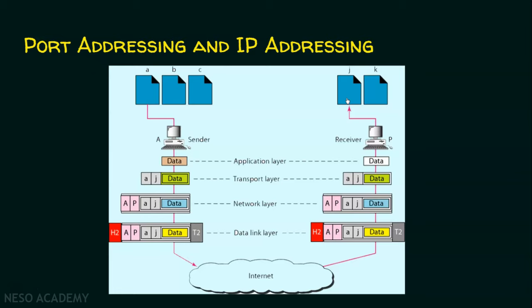That is the working of port addressing and IP addressing. Port addressing is done in the transport layer, and IP addressing is in the network layer. To make things easy to understand, I used port numbers A and J, but in reality source and destination port numbers are 16 bits. If it is an IPv4 address, it is 32 bits for both source and destination IP addresses. If it is IPv6, the source and destination IP addresses are 128 bits each. Port numbers will be 16 bits only.